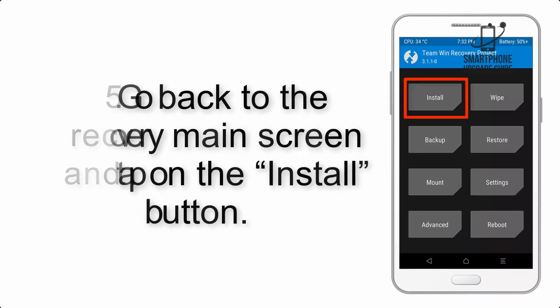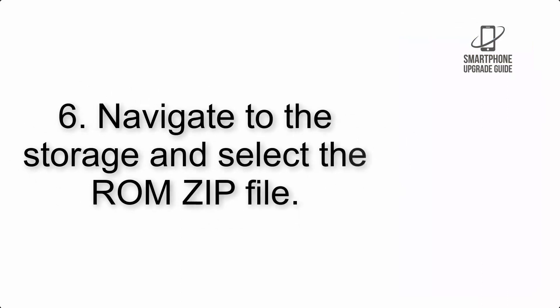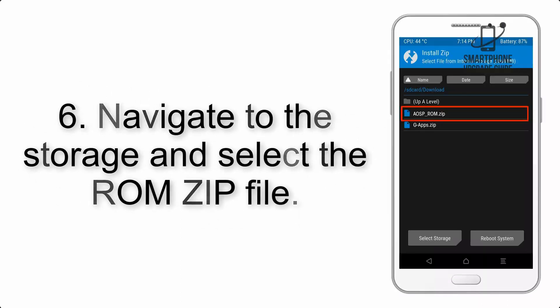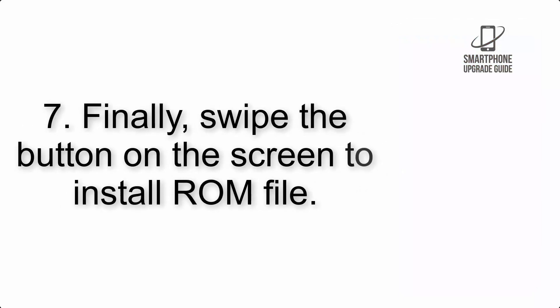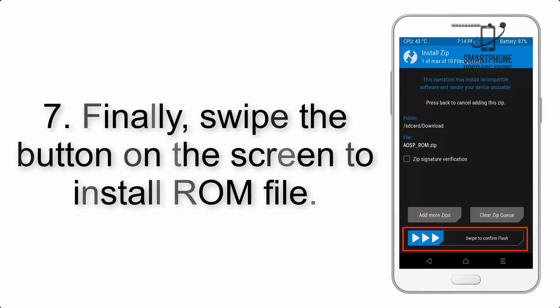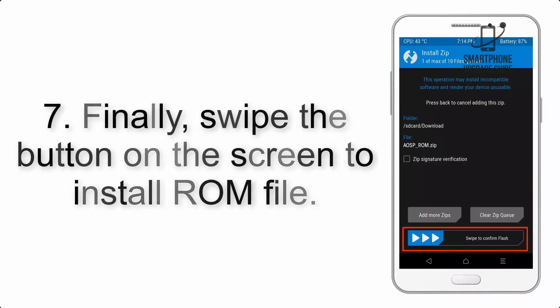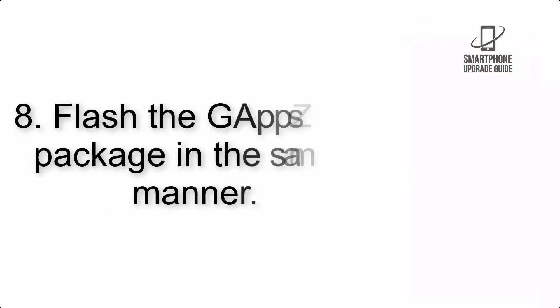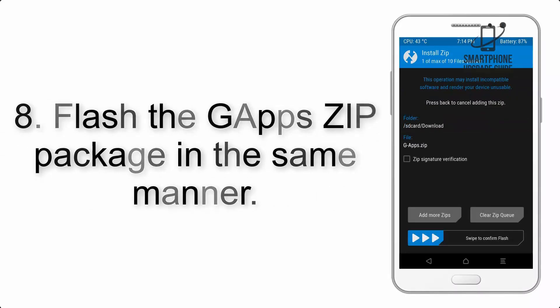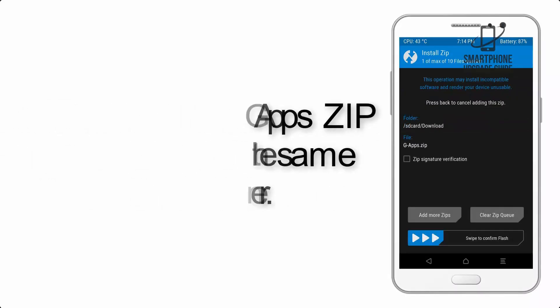Step 5: Go back to the recovery main screen and tap on the Install button. Step 6: Navigate to the storage and select the ROM zip file. Step 7: Finally, swipe the button on the screen to install the ROM file. Step 8: Flash the GApps zip package in the same manner.